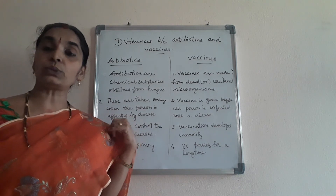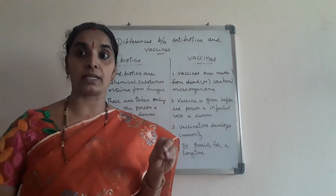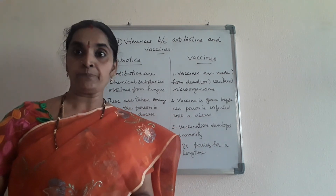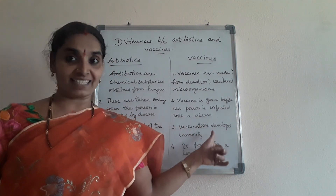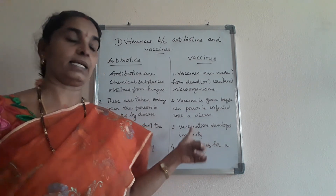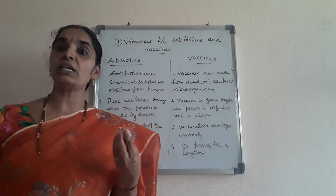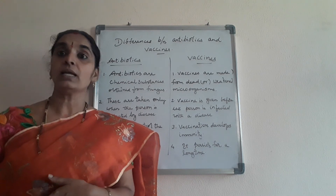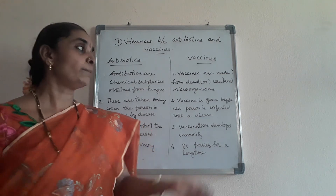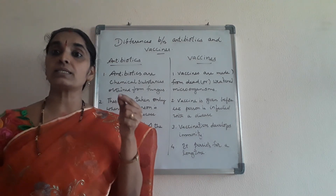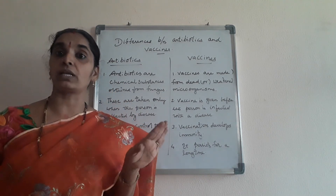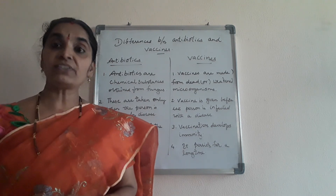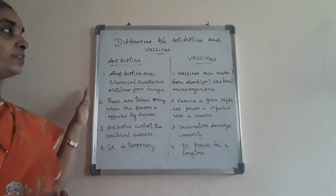Generally, antibiotics control bacterial diseases — they kill bacteria using a type of fungus. Vaccination develops immunity by preventing you from getting diseases. Vaccination is more useful because it prevents us from getting the diseases. Antibiotics are only a temporary measure — they cure for a period of time but the disease may repeat. If you take a vaccine for a particular disease, it persists in our body for a longer period and protects us as antibodies fight against disease-causing germs.